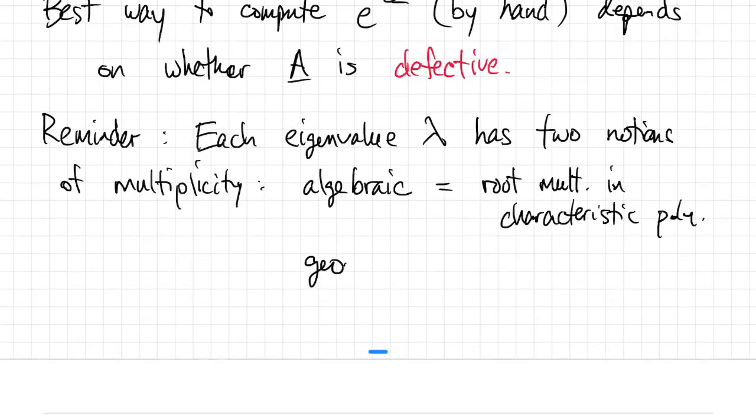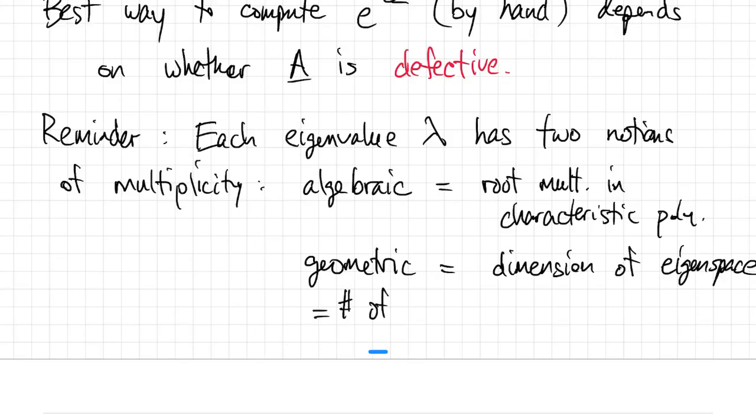And there's the geometric multiplicity, which is the dimension of the eigenspace that goes with λ. And that is equal to the number of basis vectors that it takes to express the null space of A minus λ times I.